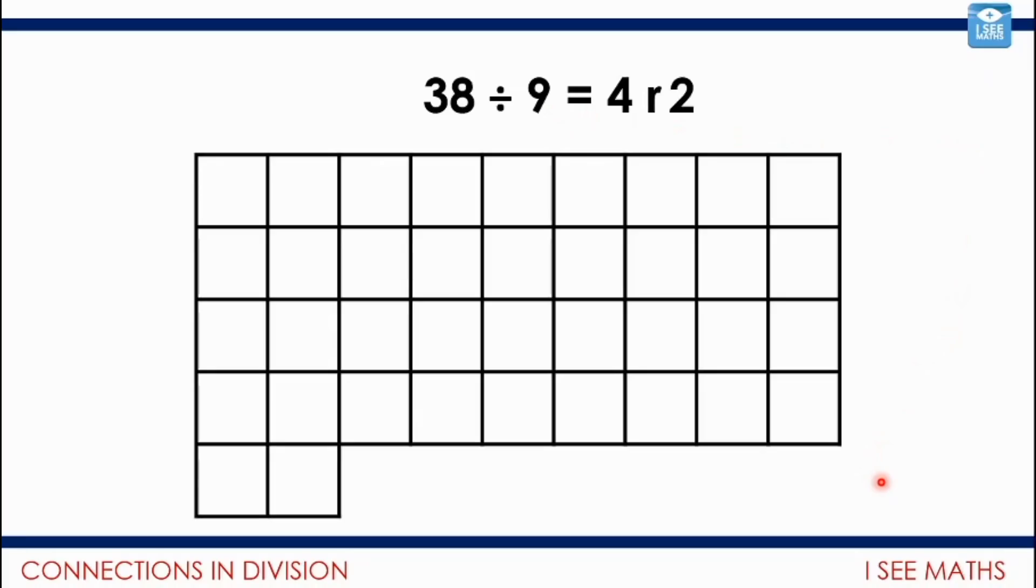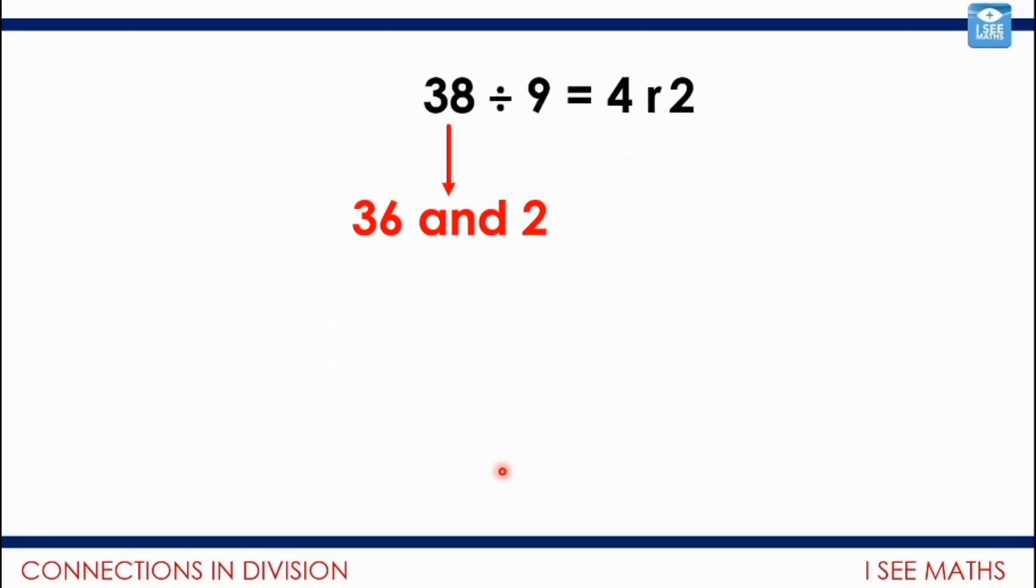But if I'm doing 38 divided by 9, all of a sudden, I do need to break the 38 up. I need to split it up into 36 and 2. Because here, I've got 36 in this section here. That's the lots of 9 that go into 38. And then there's this 2 left over. So here, I actually split my 38 into 36, a multiple of 9, the biggest multiple of 9 I can, and 2.